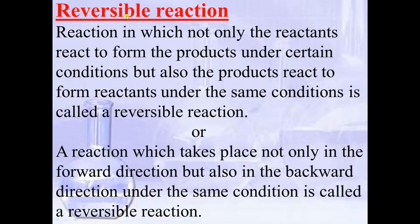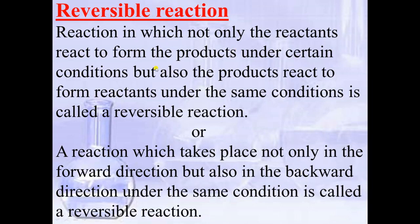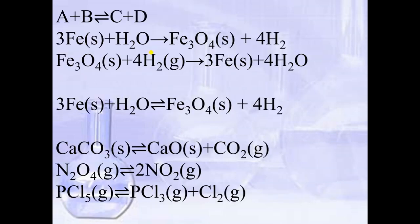First is reversible reaction. In a reversible reaction, reactants convert into products and products convert back into reactants. For example, A reacts with B to form C plus D. When C reacts with D, it gives back A and B. When A+B gives C and D, the reaction is in the forward direction; when C and D give A+B, it is in the backward direction.